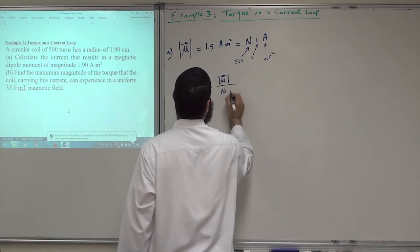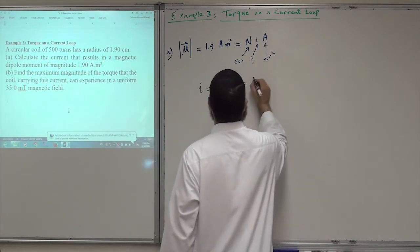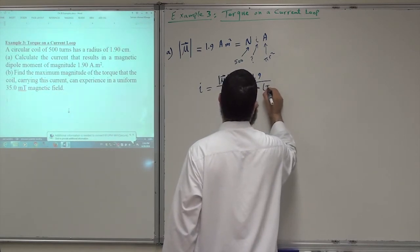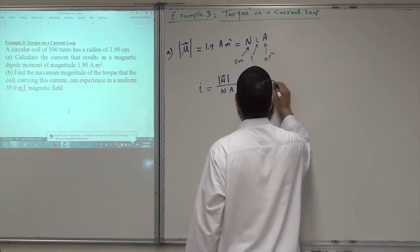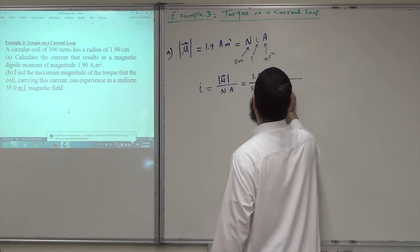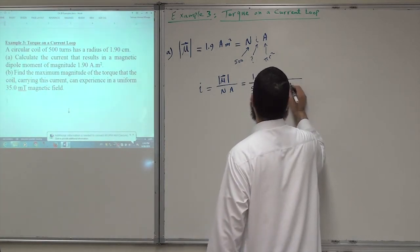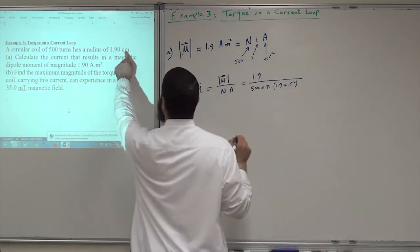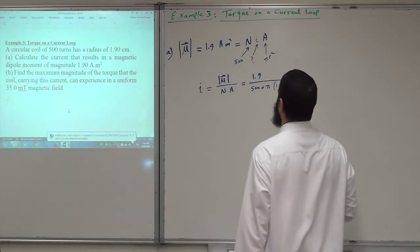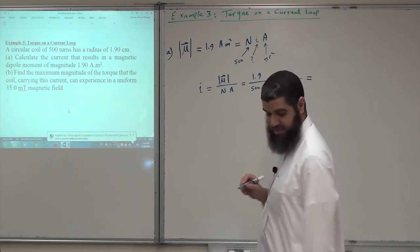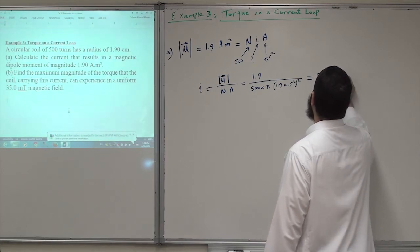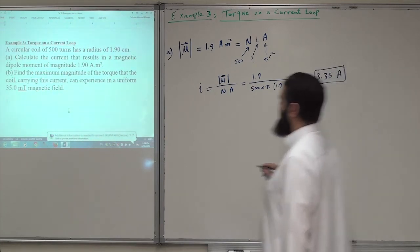Substituting values: I = 1.9 / (500 × π × (1.9×10⁻²)²). Converting radius from centimeters to meters is essential. Performing this calculation gives I = 3.35 amperes. This is the answer for part a.